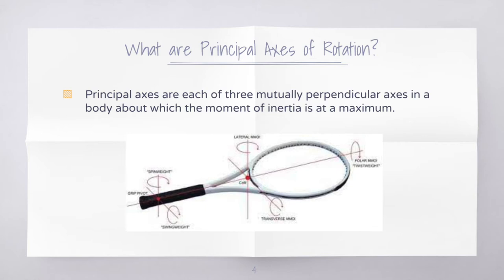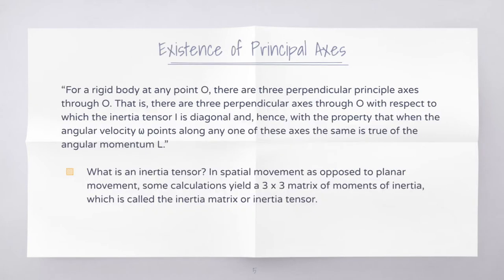Let's start with what principal axes are in the first place. Principal axes are each of three mutually perpendicular axes in a body about which the moment of inertia is at a maximum. In chapter 10, the existence of principal axes is mentioned and states: for a rigid body at any point O, where O is the origin, there are three perpendicular principal axes through O, meaning that there are three perpendicular axes through O, with respect to which the inertia tensor I is diagonal.